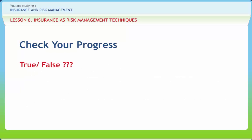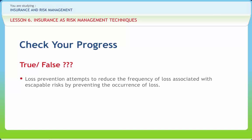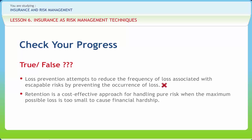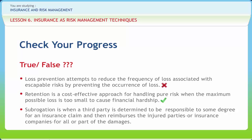Now let us check if we have understood the various concepts discussed in this lesson clearly. Loss prevention attempts to reduce the frequency of loss associated with escapable risk by preventing the occurrence of loss — right or wrong? Wrong. Retention is a cost-effective approach for handling pure risk when the maximum possible loss is too small to cause financial hardship — right or wrong? Right. Subrogation is when a third party is determined to be responsible to some degree for an insurance claim and then reimburses the injured parties or insurance companies for all or part of the damages — right or wrong? Right.